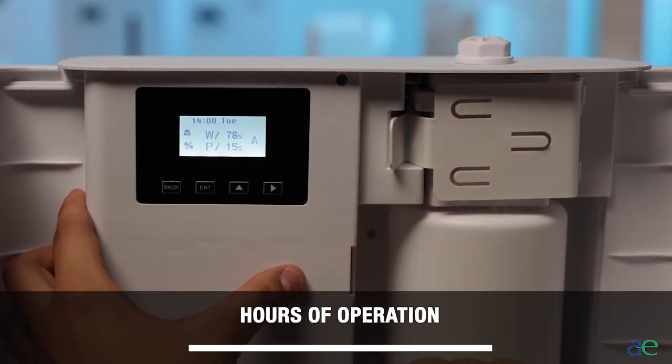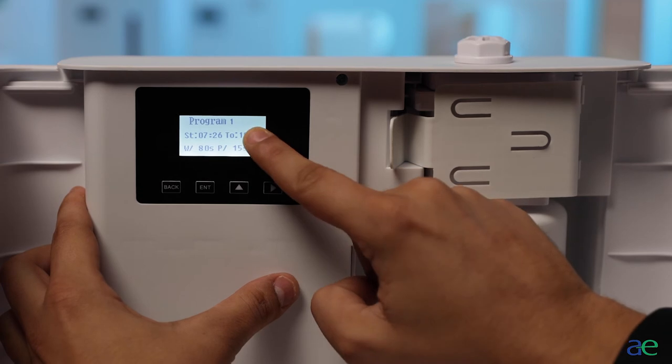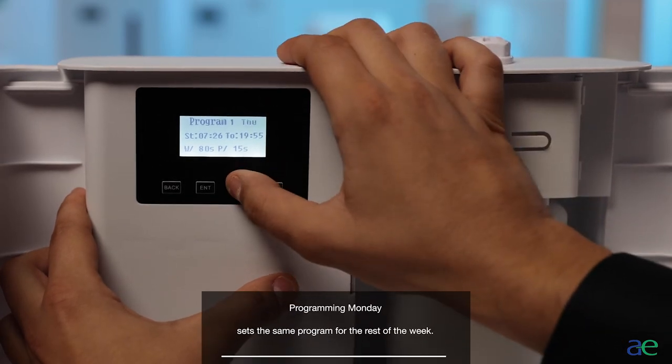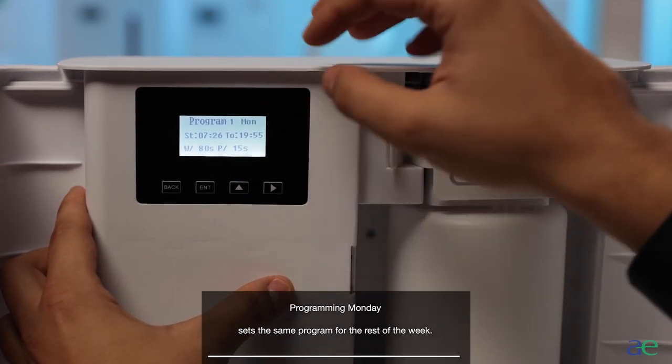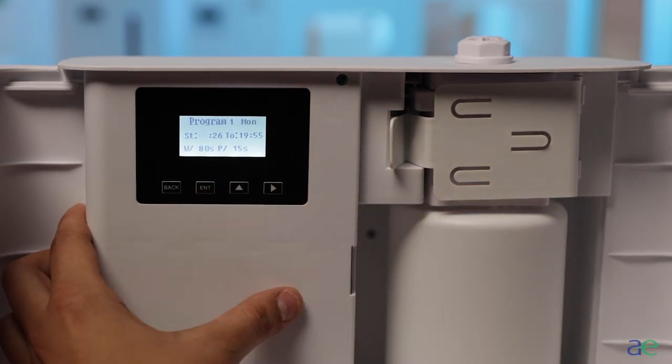Hours of operation. Press the right arrow once. The day of the week will begin to blink. Programming Monday will place the same program for the rest of the week. Press the enter button. The one for the program will begin to blink.